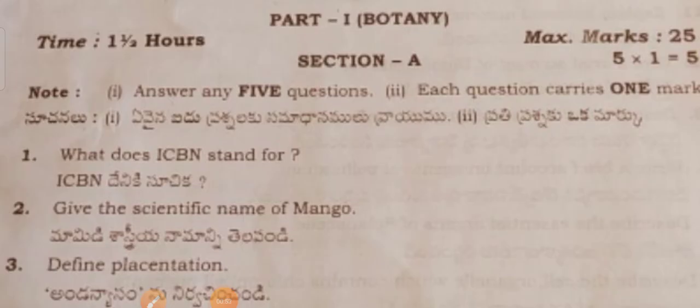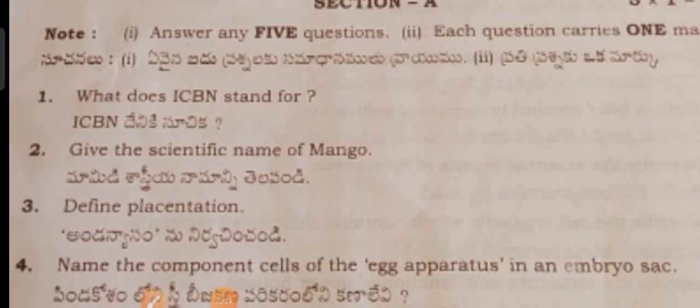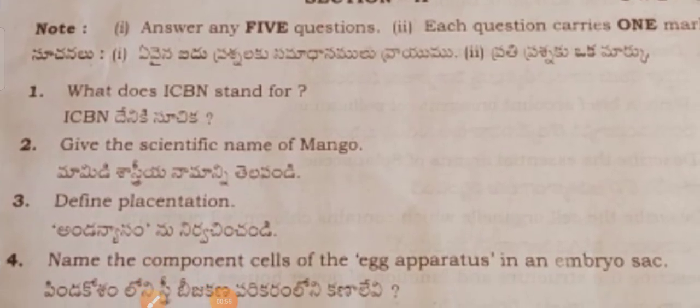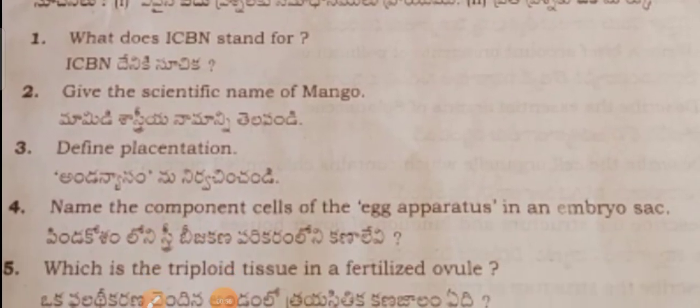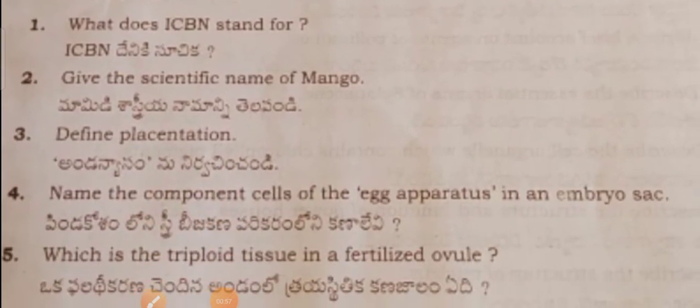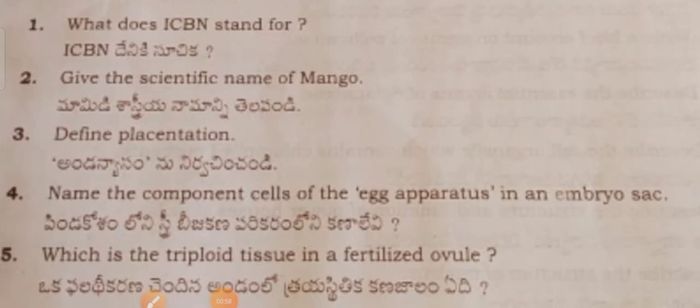Section A questions are very short answer questions, like one-mark questions. You will have ten questions and out of ten you have to attempt — there will be a choice in Section A as well. Section A will have a choice.